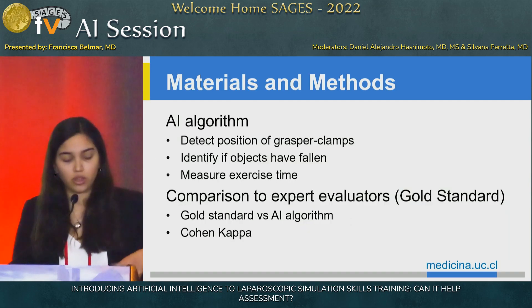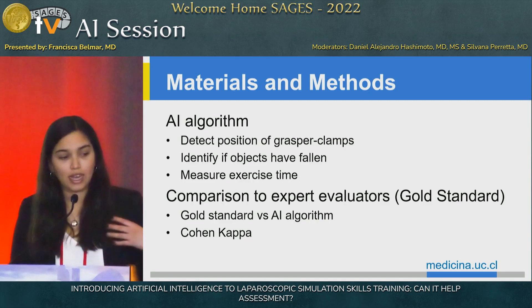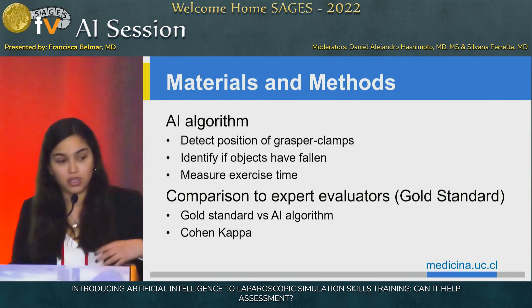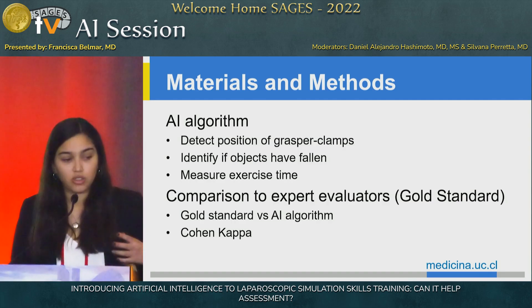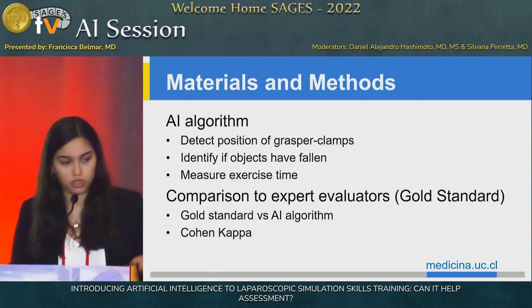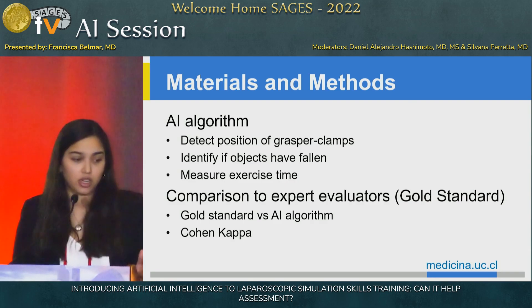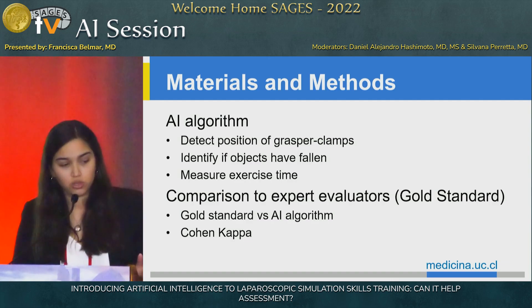The goals of this algorithm were to detect the precision of the grasper clamps, identify if the objects — the beans or the rubber objects — have fallen, and measure the exercise from the first touch of the grasper to the object to the last touch of the grasper. Afterwards, we compared those assessments to our current gold standard: expert evaluators. To do so, we used the Cohen Kappa test.